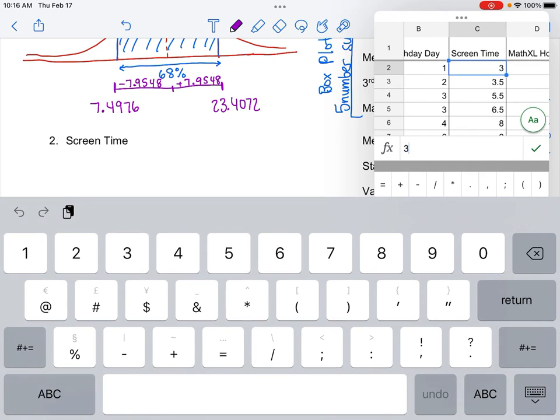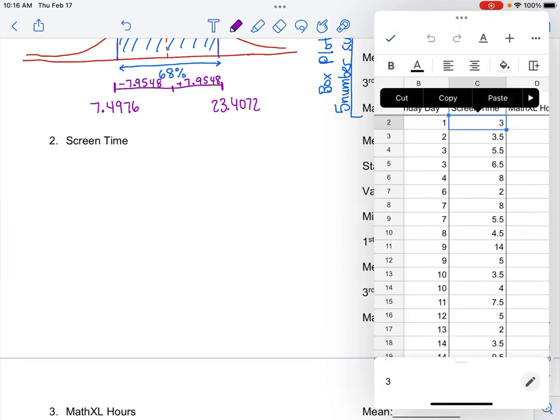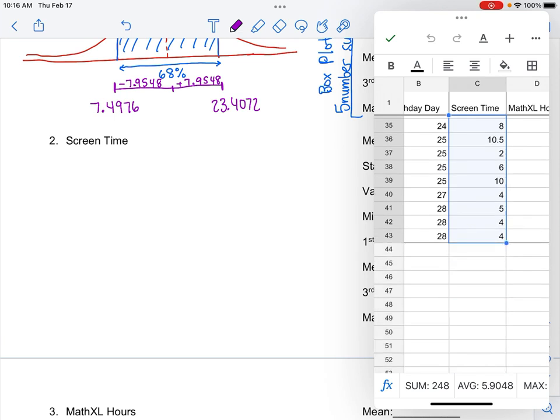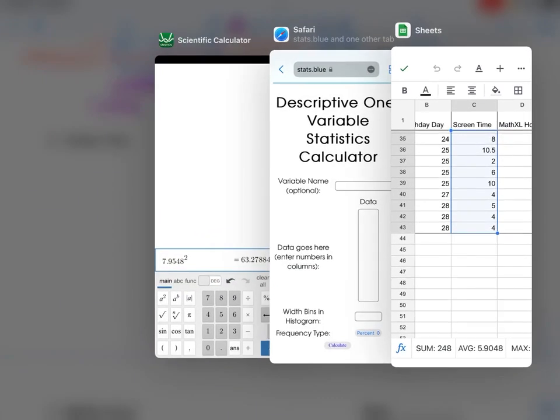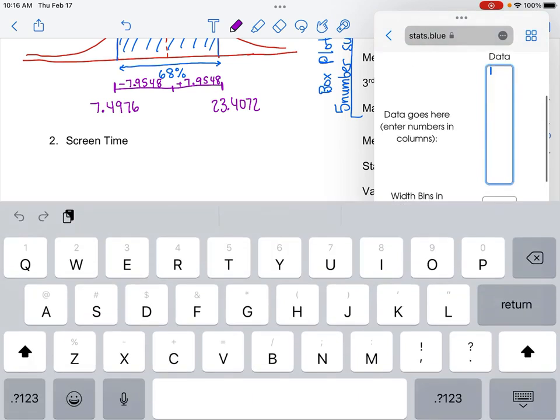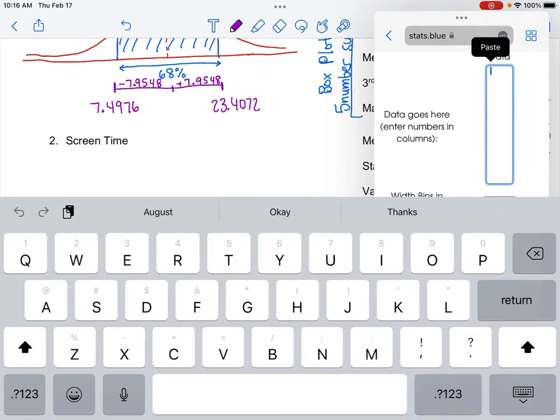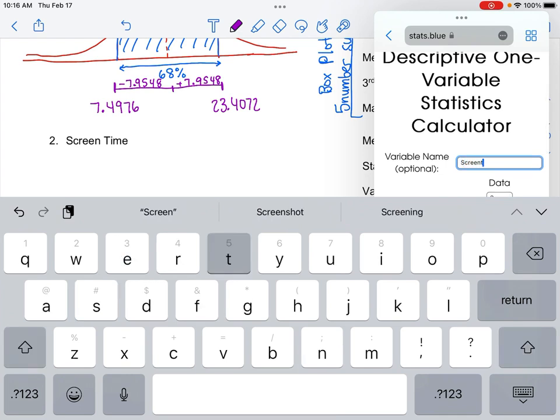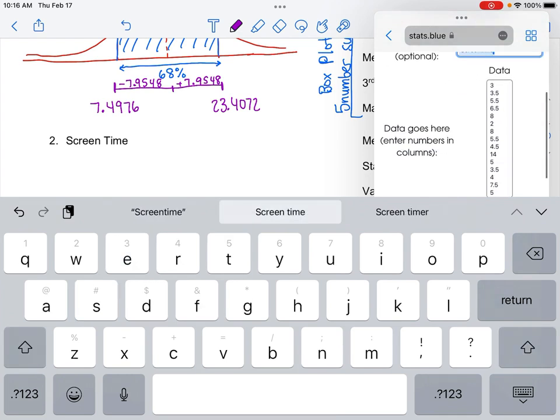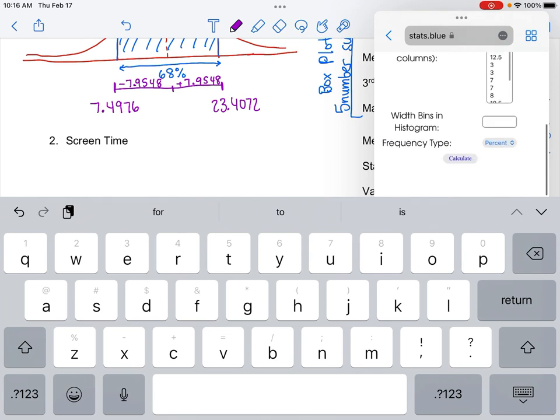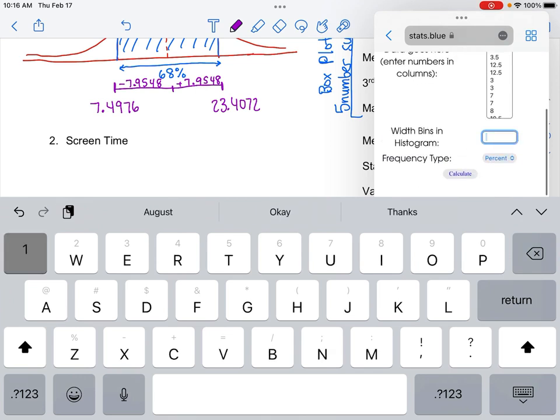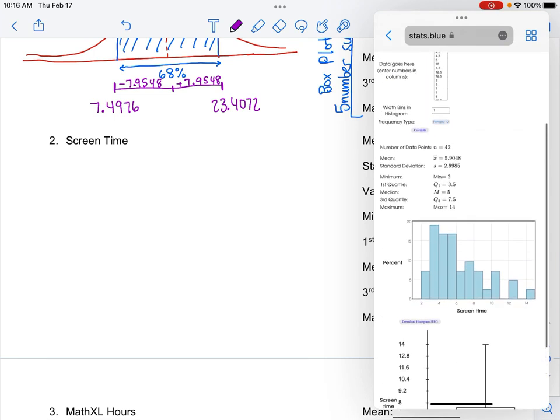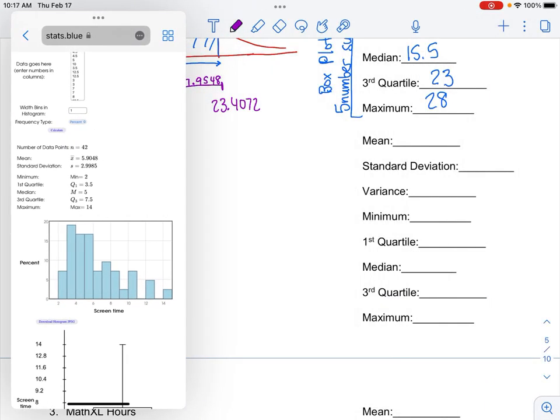I'm going to pull up my student data and go to screen time now. Make sure I get all my data points. And then copy them. Go back to stat.blue. And then paste here. We've got screen time on your phone. And then we'll do histogram bin width of one again. And we will calculate.